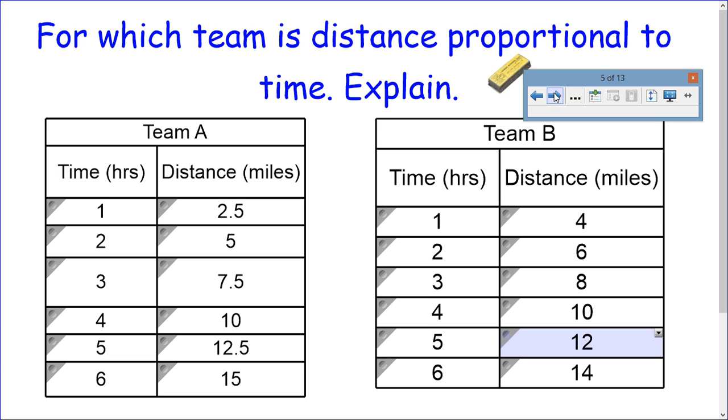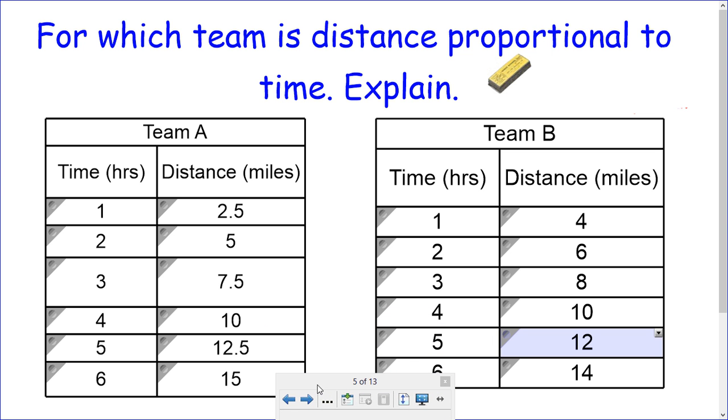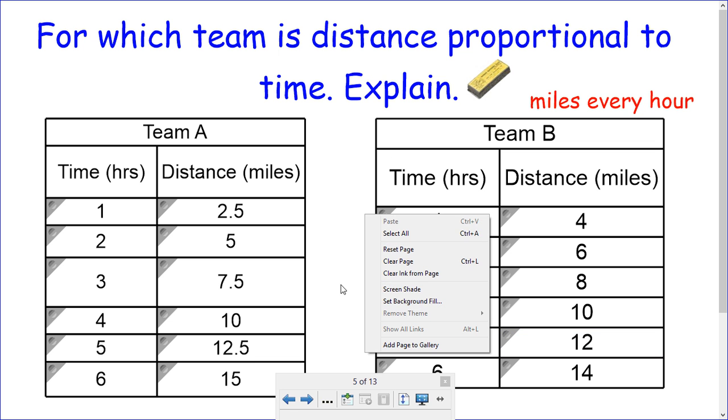Now, it said on the top here about proportional, which team's distance is proportional to time. Now, I mentioned if you look at that constant timing of 2.5, that shows you have a proportion because you can multiply to get the miles. So when you multiply the hours, you get the miles. But over here, there is no multiplier. 1 times 4 would give you 4. But if I kept multiplying by 4, I would have 4 times 2. That would give me 8, not 6. So this team B is not a distance proportional to time. So team A would be that. And remember, when we're talking proportional, we're talking miles for every hour. So team A would be proportional. And we're going to talk more about that.